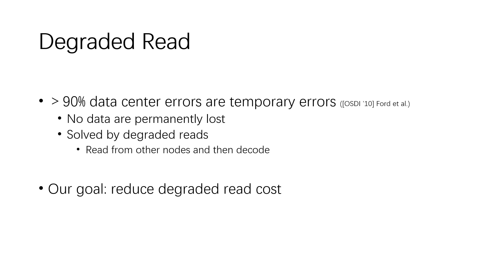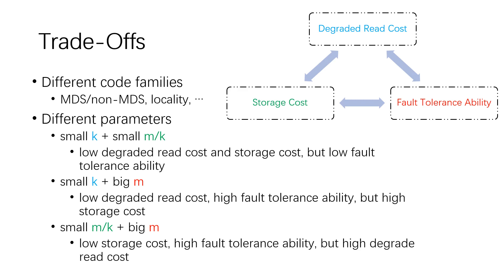Therefore, we try to reduce degraded read cost. There is a trade-off among three aspects: degraded read cost, storage cost, and fault tolerance ability. Using codes in different code families achieves different results. For example, MDS codes achieve low storage cost compared to non-MDS codes, and codes with good locality achieve low degraded read cost. However, within the same code family with different parameters, we cannot simultaneously achieve low degraded read cost, low storage cost, and high fault tolerance ability.